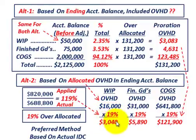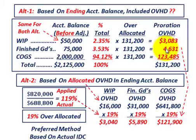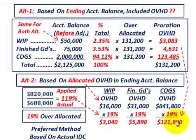For work in process, we have $16,000 of overhead times 19%, giving us $3,040 — compare that to alternative one's $3,083. For finished goods, $31,000 times 19% gives us $5,890, which is a bit different from alternative one's $4,631. For cost of goods sold, 19% times $641,800 gives us $121,900, compared to $123,485 for alternative one.